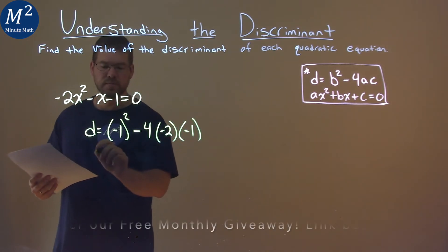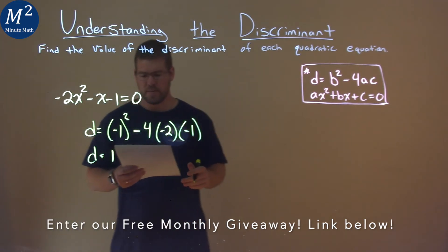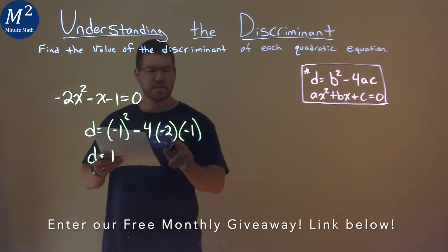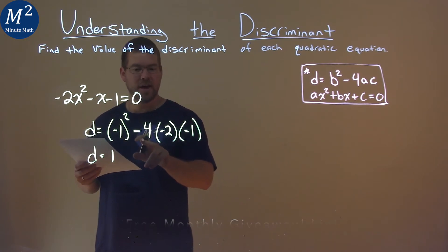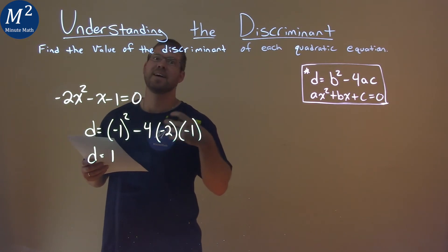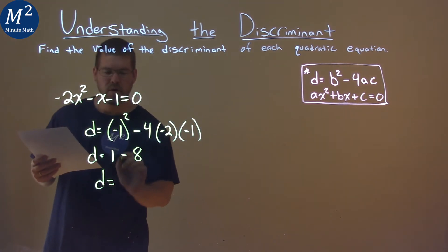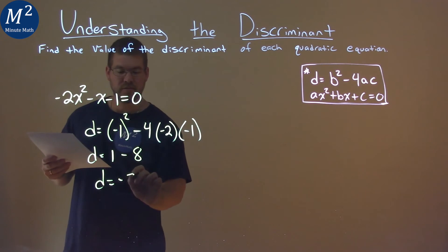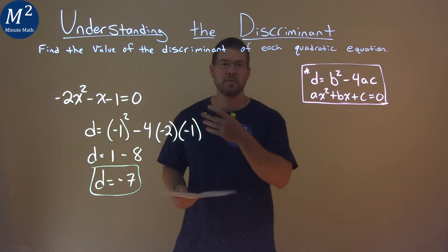And now we just have to solve. Negative 1 squared is positive 1, and then 4 times 2 times 1 is 8, and then we have three negatives. Negative times a negative times a negative is a negative. So we have 1 minus 8 is a negative 7, and so our discriminant here is negative 7.